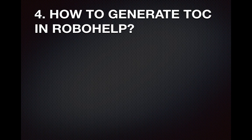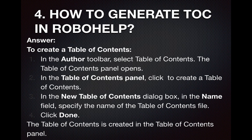Question number four: How to generate a TOC in RoboHelp? To create a table of contents, go to the Author toolbar and select Table of Contents. The Table of Contents panel opens. In the panel, click to create a table of contents. In the New Table of Contents dialog box, specify the name of the table of contents file in the Name field and click Done. The table of contents is created in the Table of Contents panel.